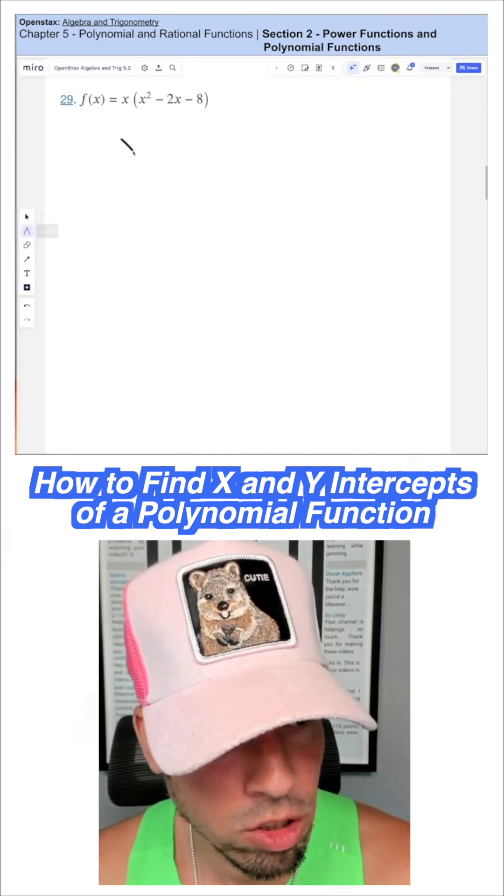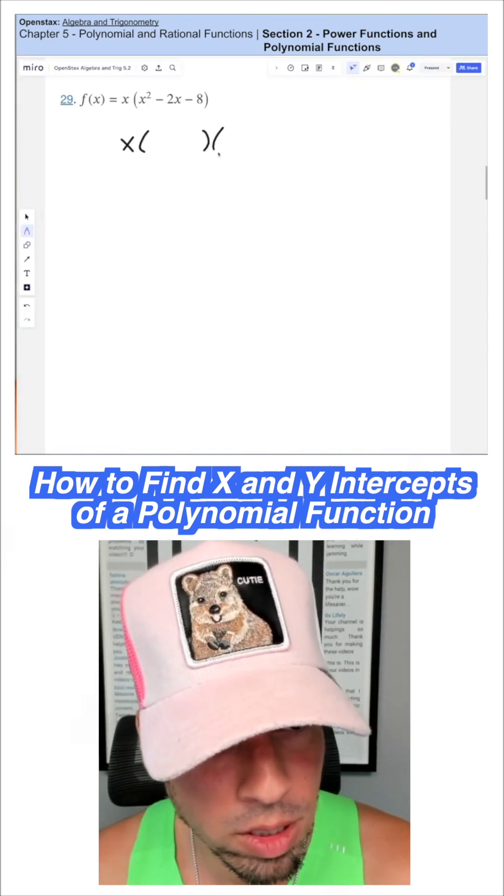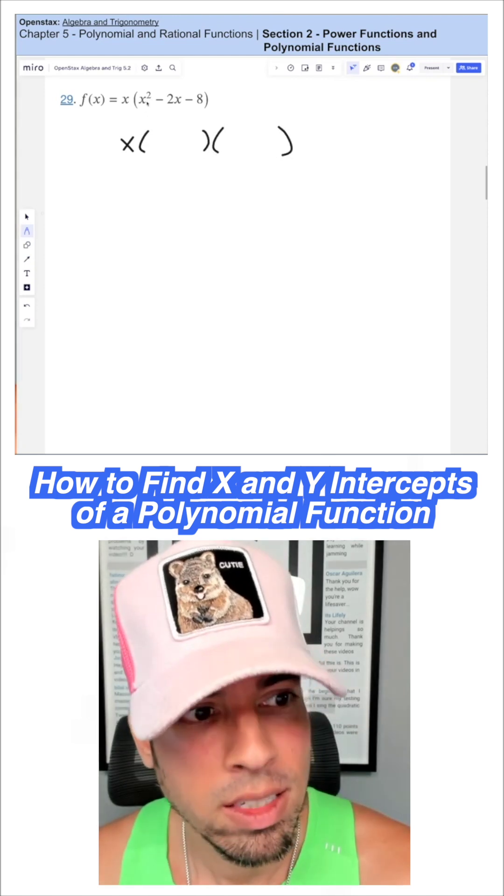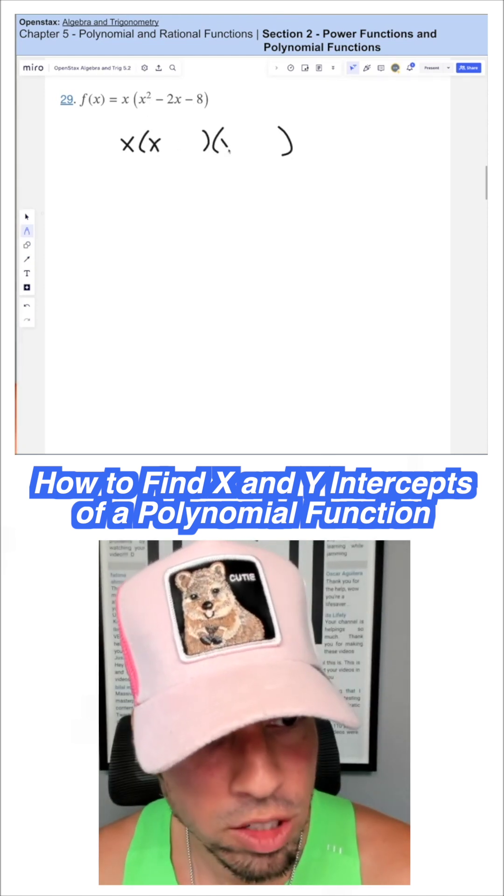This one, define the x-intercepts. We're going to start off right away factoring that trinomial. So it's x squared minus 2x minus 8, meaning we put the x here and x here.